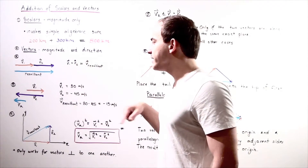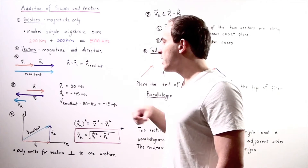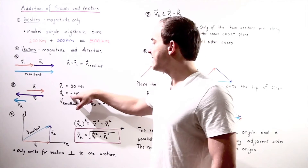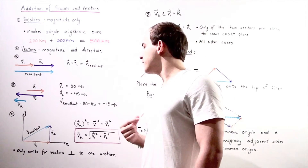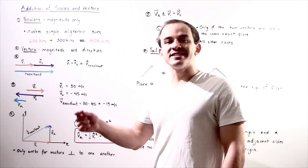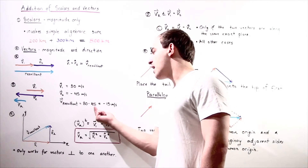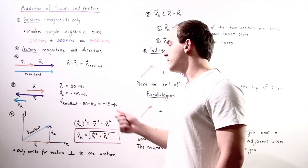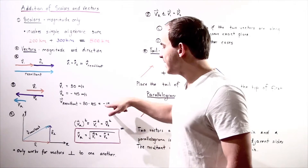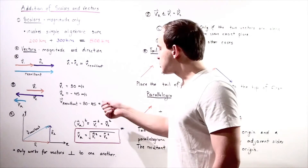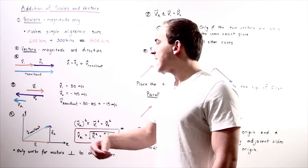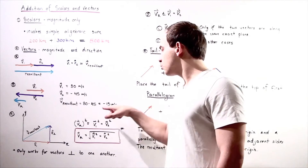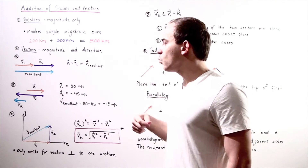Let's suppose vector 1 is 30 meters per second, and vector 2 is 45 meters per second, but it points in the opposite direction, so it has a negative sign. We have 30 plus negative 45, which gives us negative 15 meters per second. So our resultant vector — our final vector after adding vector 1 and vector 2 — points in the opposite direction compared to vector 1.